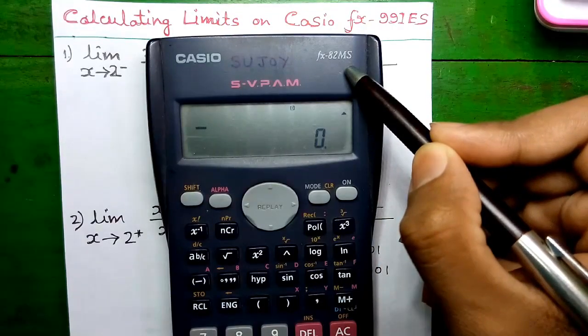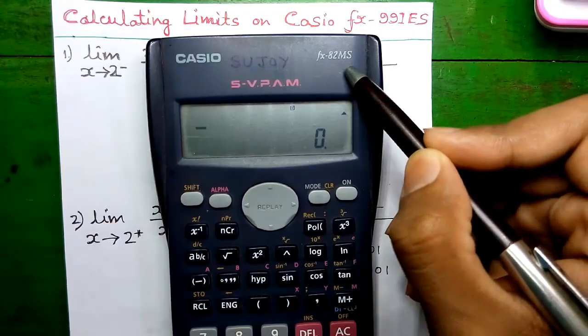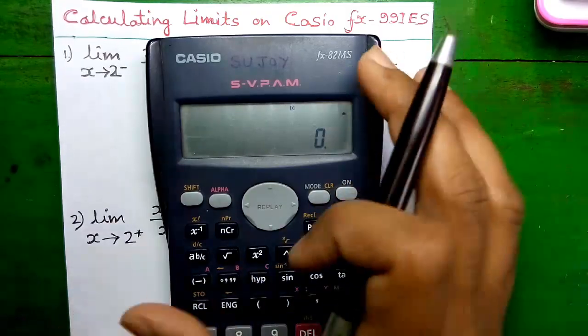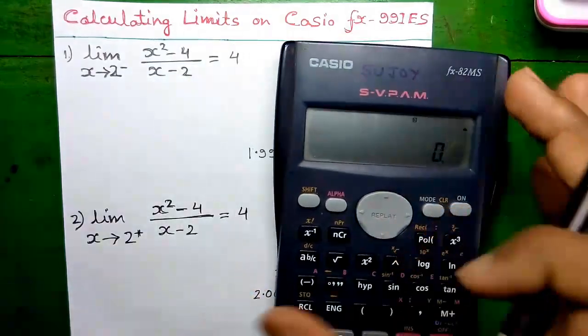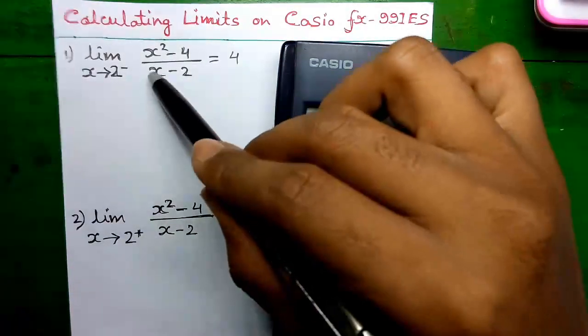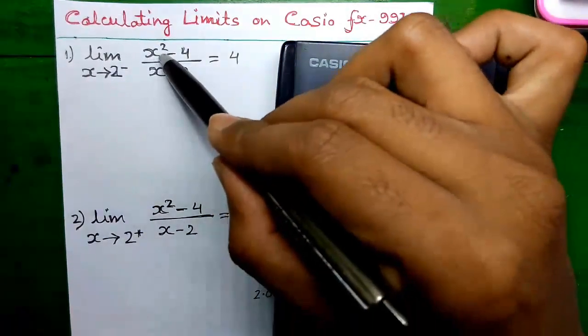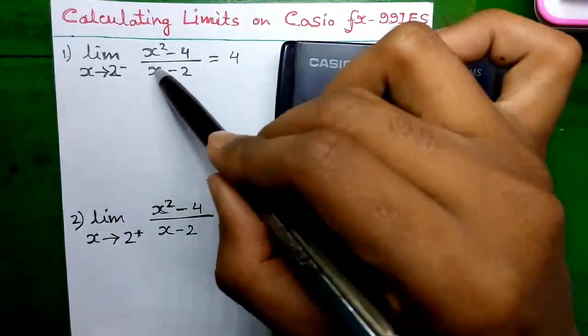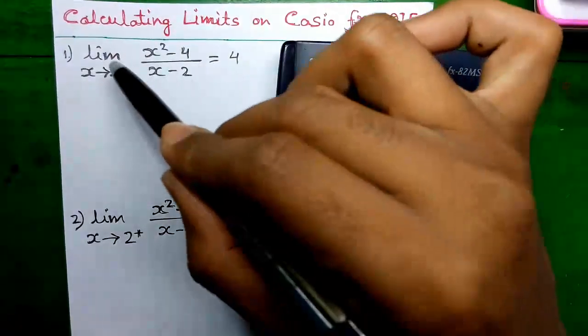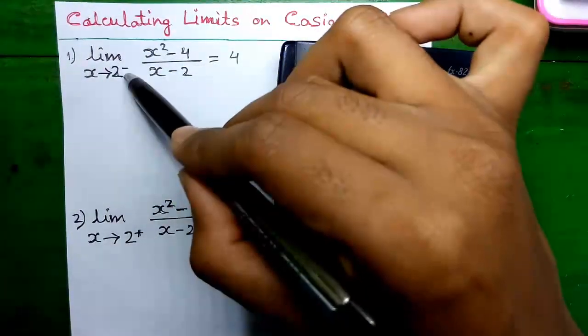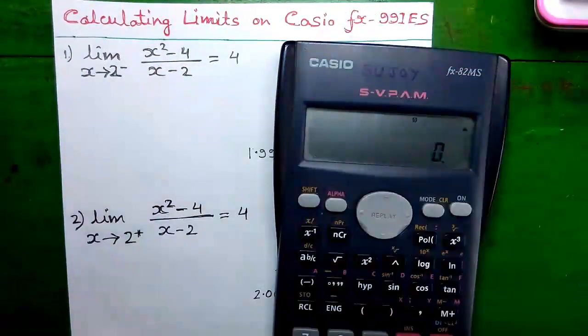Will we calculate the limits numerically? So our question is: find out the limit of x squared minus 4 divided by x minus 2, at x equals to 2.